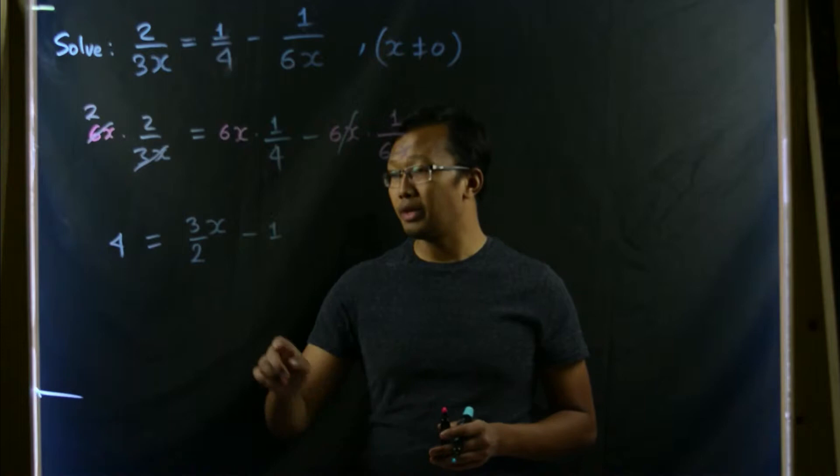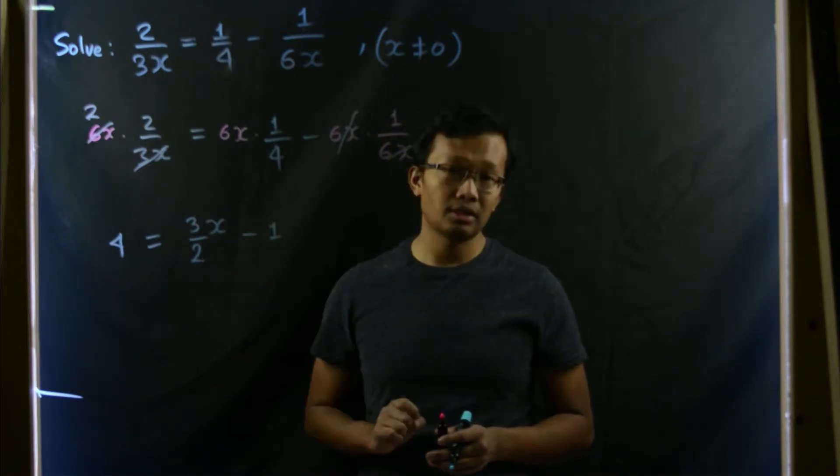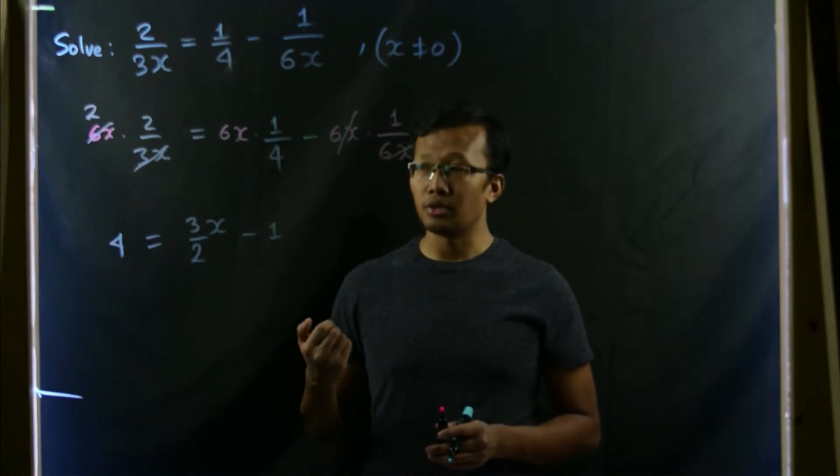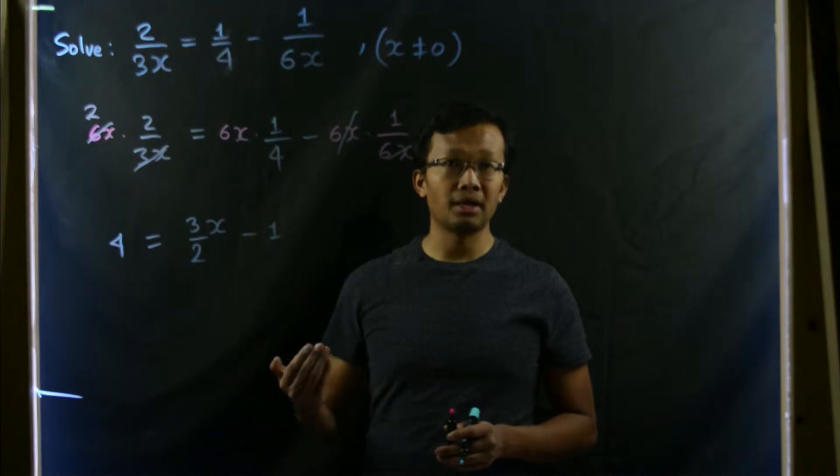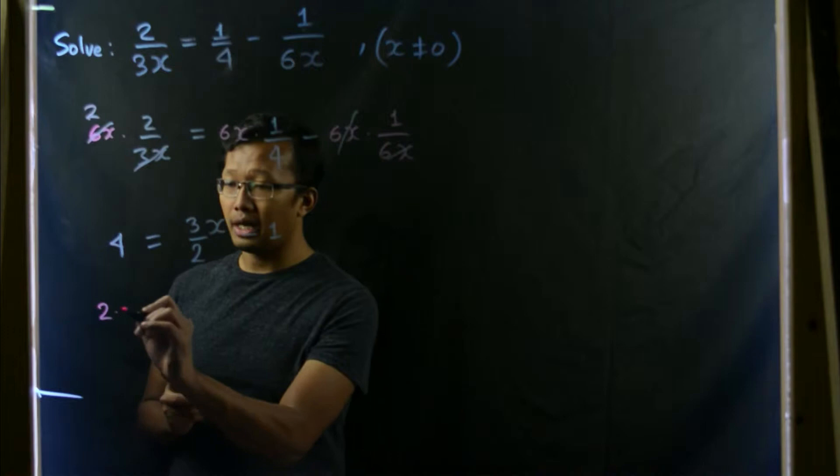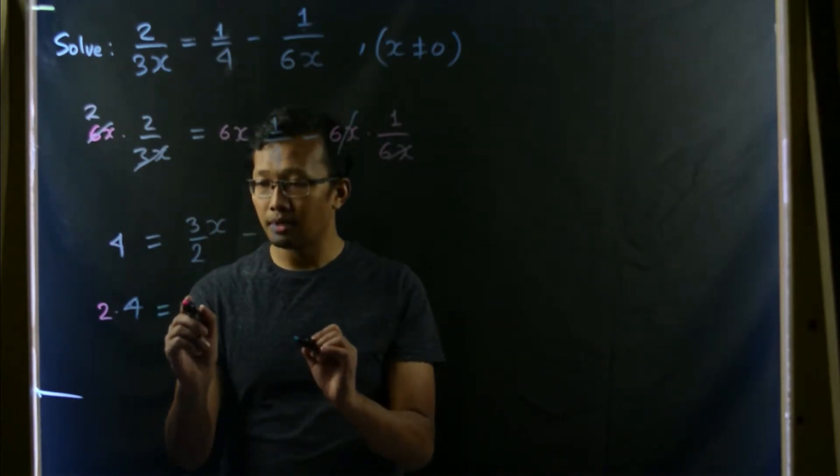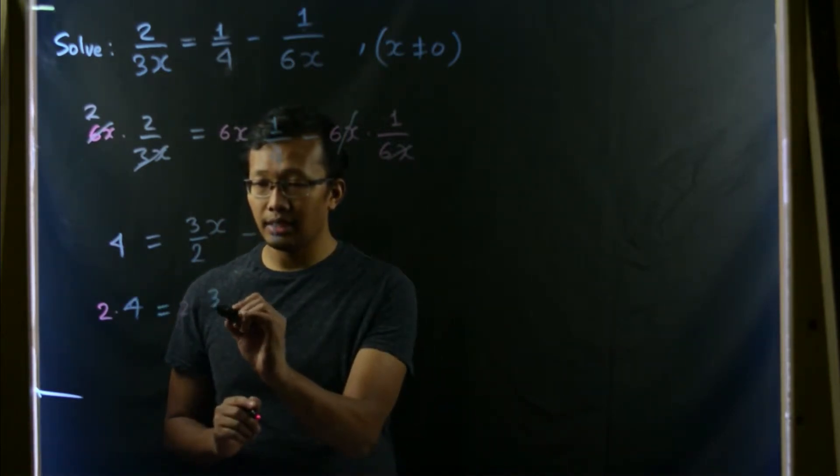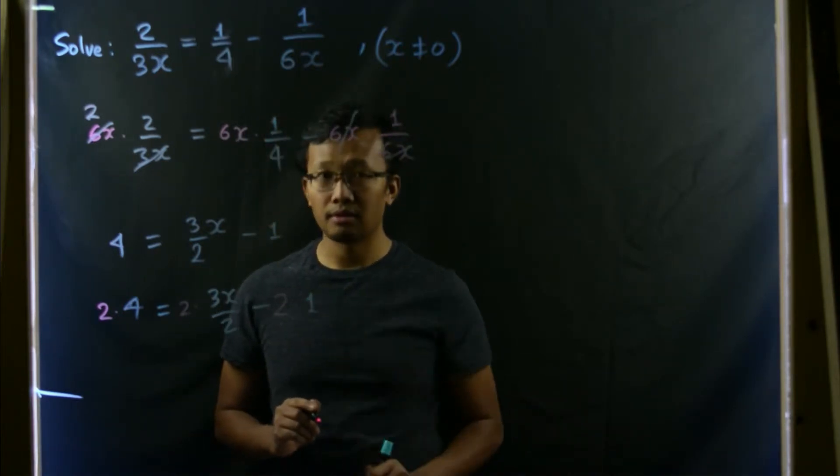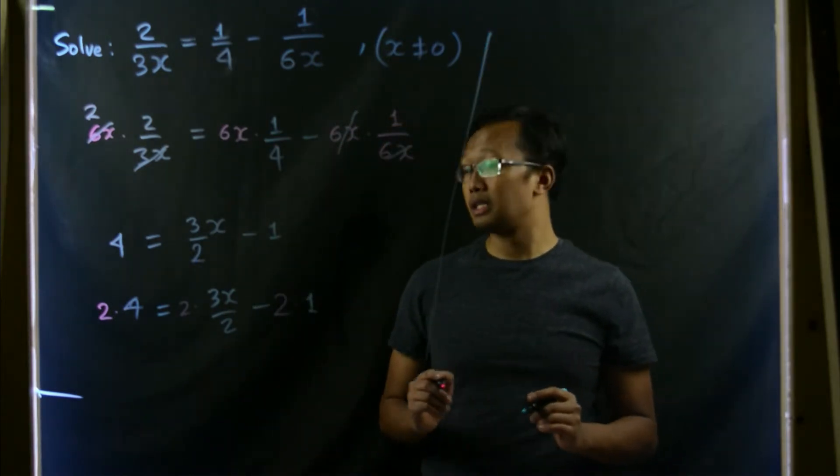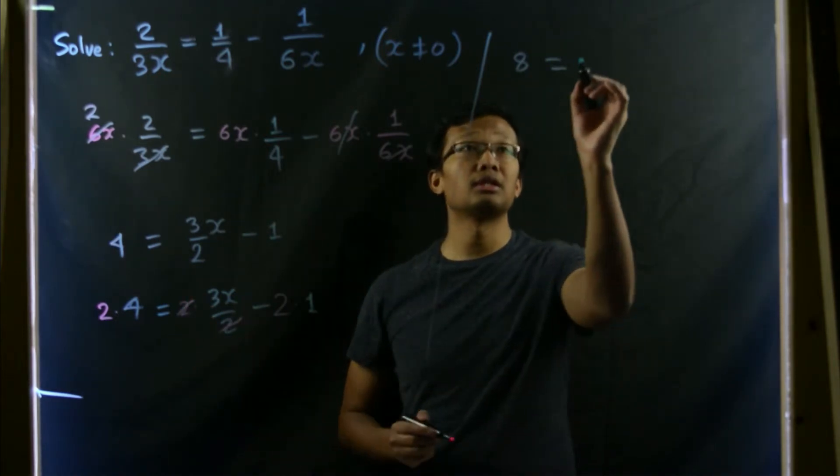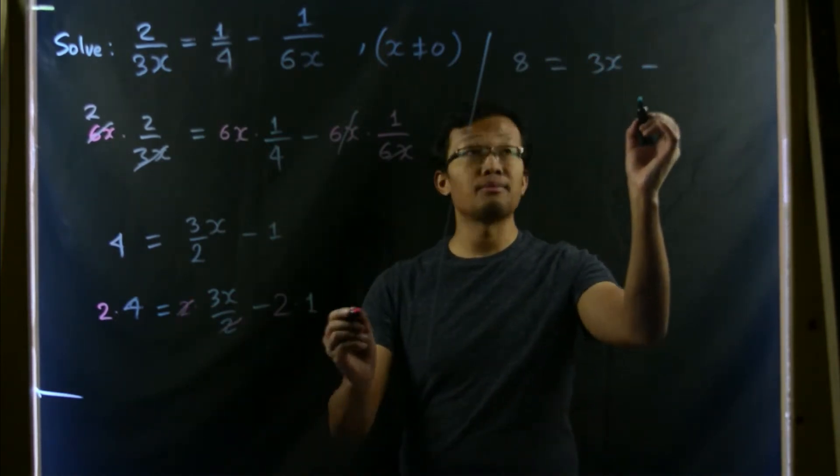But still we have a denominator 2 in one of the expressions. So let's remove that by doing a similar kind of operation. Let's multiply both sides of this equation by 2. Then this will be 2 times 4 equals 2 times 3x/2 minus 2 times 1. Then you can see that 2 times 4 is 8 equals 3x minus 2.